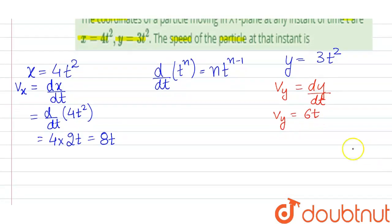Now the speed or the magnitude of velocity can be determined by the expression under root vx square plus vy square. That means under root 8t whole square plus 6t whole square.